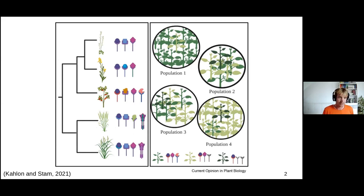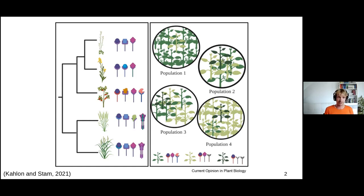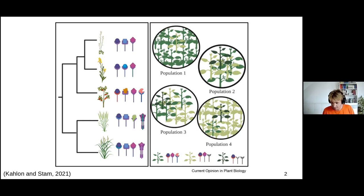I'd like to start with a slide from a recent Current Opinion paper illustrating that there is a large mismatch or gap in our knowledge. On the left, we illustrate that we know different crops — Arabidopsis, tomato, and so on — all have very different genetic compositions, also in terms of resistance properties and specific resistance gene families. But once we look at the population level within one species, we have absolutely no idea. This has only been studied a little in Arabidopsis with the 1001 Genomes project.